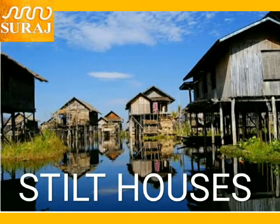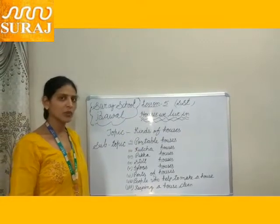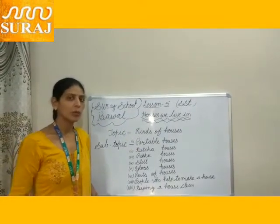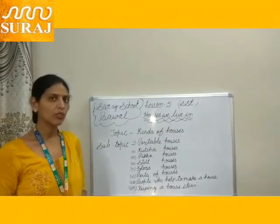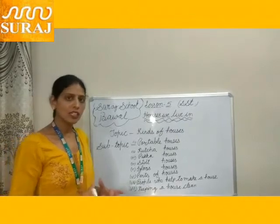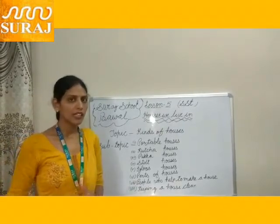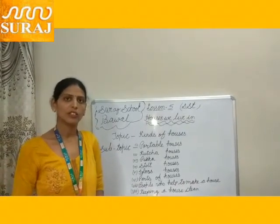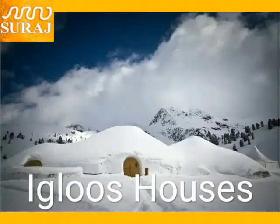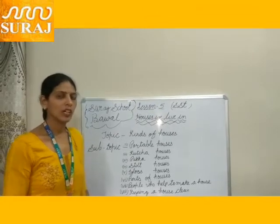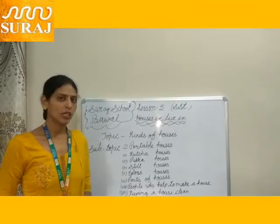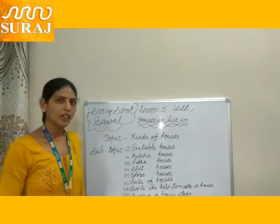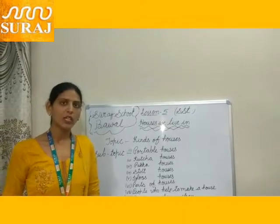Stilt houses are built on high bamboo poles. We find them in places with heavy rainfall. Igloos are houses made of snow. They are built in extremely cold places.